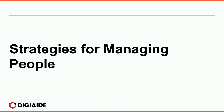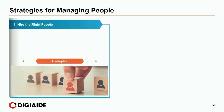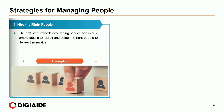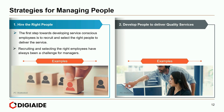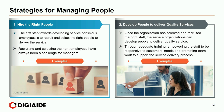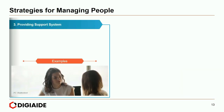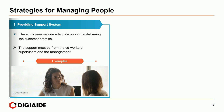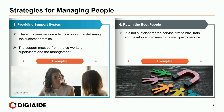Now moving on to some generic strategies for managing people in your organization. First, hire the right people — the first step towards developing service-conscious employees is to recruit and select the right people to deliver the service. Next, develop people to deliver quality services — through adequate training, empowering staff to be responsible to customers' needs, and promoting teamwork to support the service delivery process. Number three, providing the support system — employees require adequate support from co-workers, supervisors and management. And finally, retain the best employee — service firms must also strive to retain the best employees, treating them as customers and including them in the company's vision.